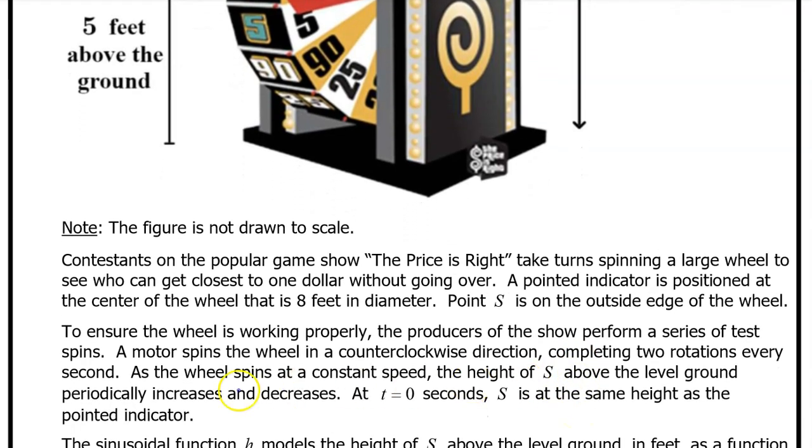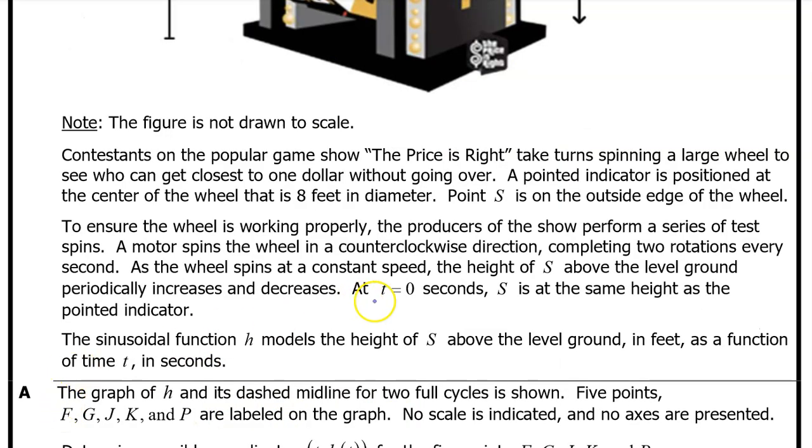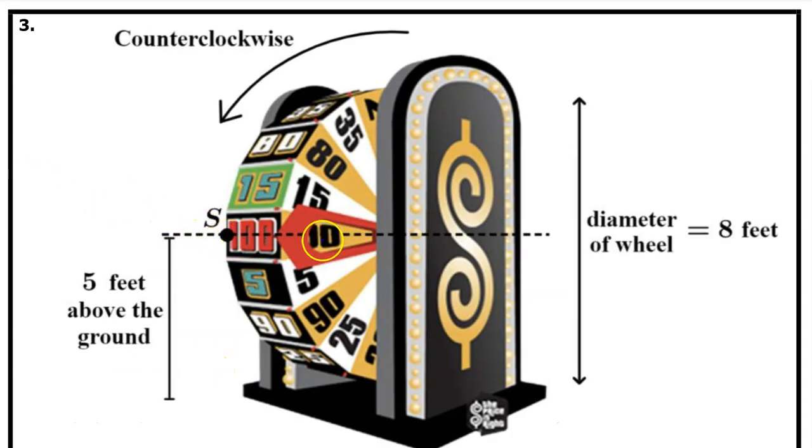A motor spins the wheel in a counterclockwise direction, completing two rotations every second. As the wheel spins at a constant speed, the height of S above the level ground periodically increases and decreases. At t equals zero seconds, S is at the same height as the pointed indicator. The sinusoidal function H models the height of S above the level ground in feet as a function of time in seconds. There's the point S and this is the pointed indicator.